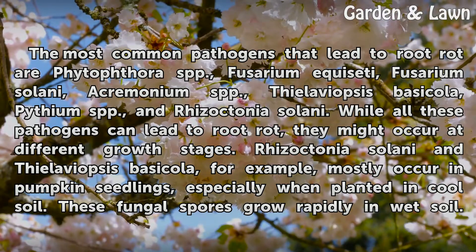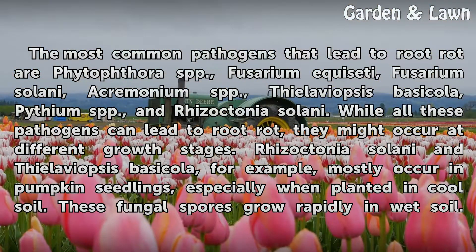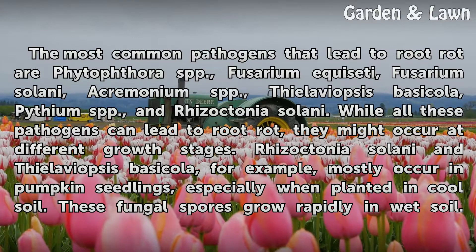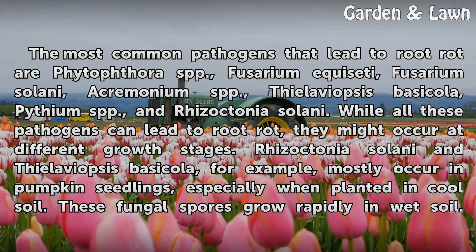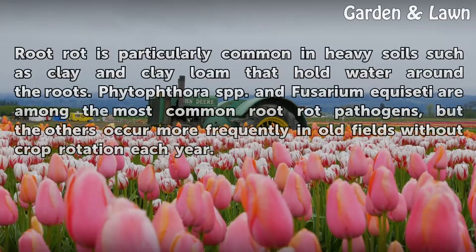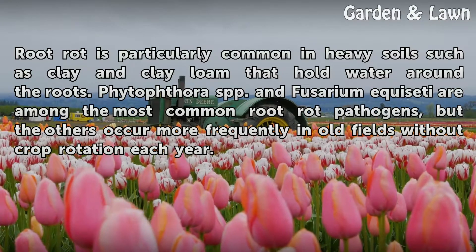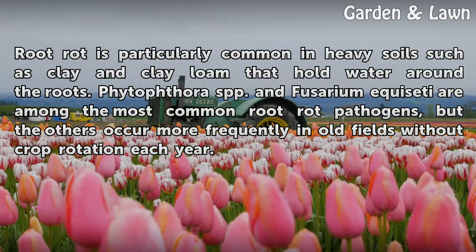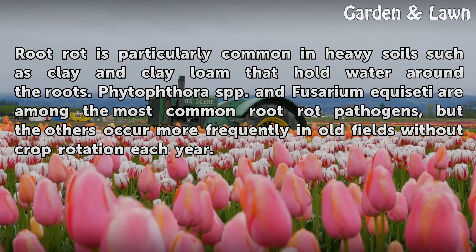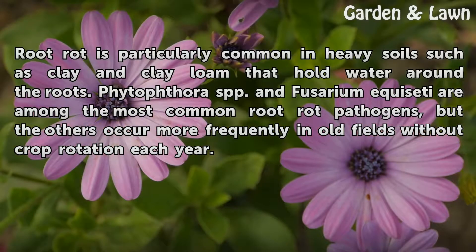While all these pathogens can lead to root rot, they might occur at different growth stages. Rhizoctonia solani and Thielaviopsis basicola, for example, mostly occur in pumpkin seedlings, especially when planted in cool soil. These fungal spores grow rapidly in wet soil. Root rot is particularly common in heavy soils such as clay and clay loam that hold water around the roots. Phytophthora SPP and Fusarium equiseti are among the most common root rot pathogens, but the others occur more frequently in old fields without crop rotation each year.